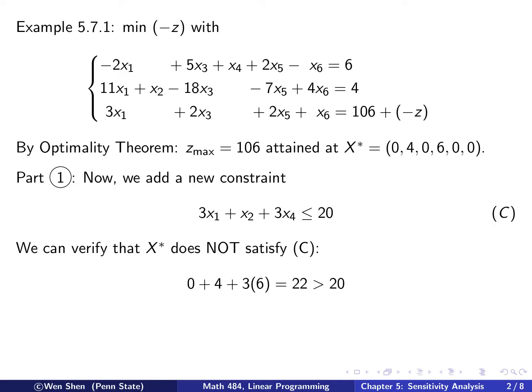So let's put it in. X1, X2, X3, X4 is 0, 4, and 6. Plug in the value, add them up. It's 22, and it's strictly bigger than 20, so it does not satisfy. So this means a new computation is needed.